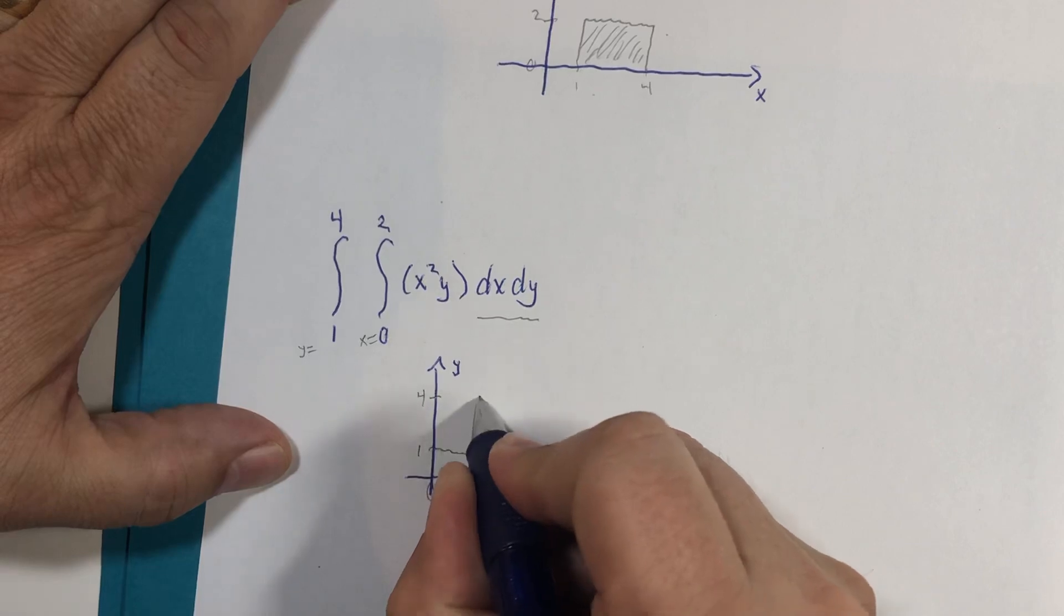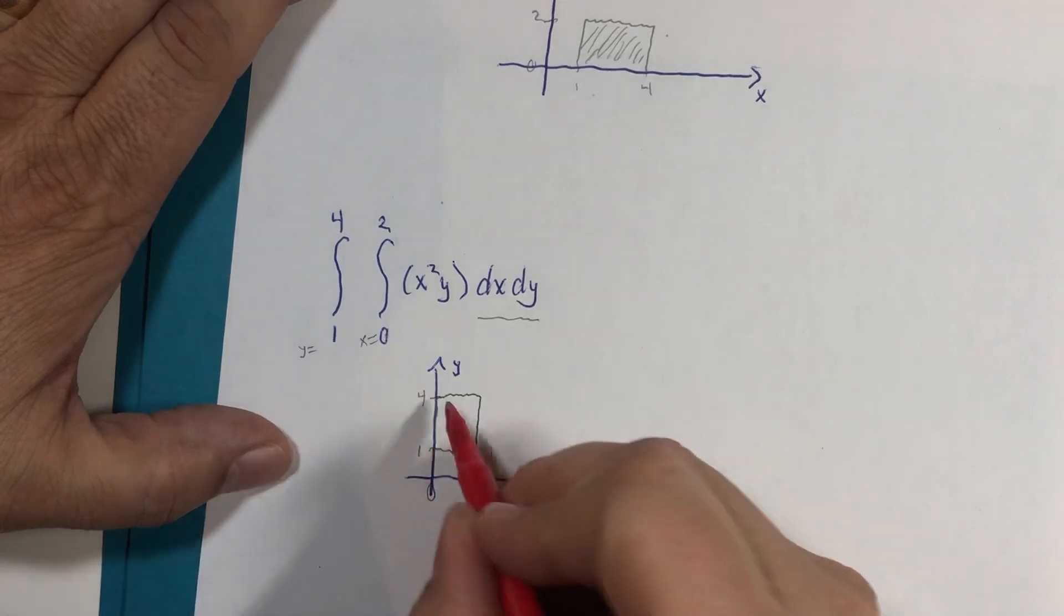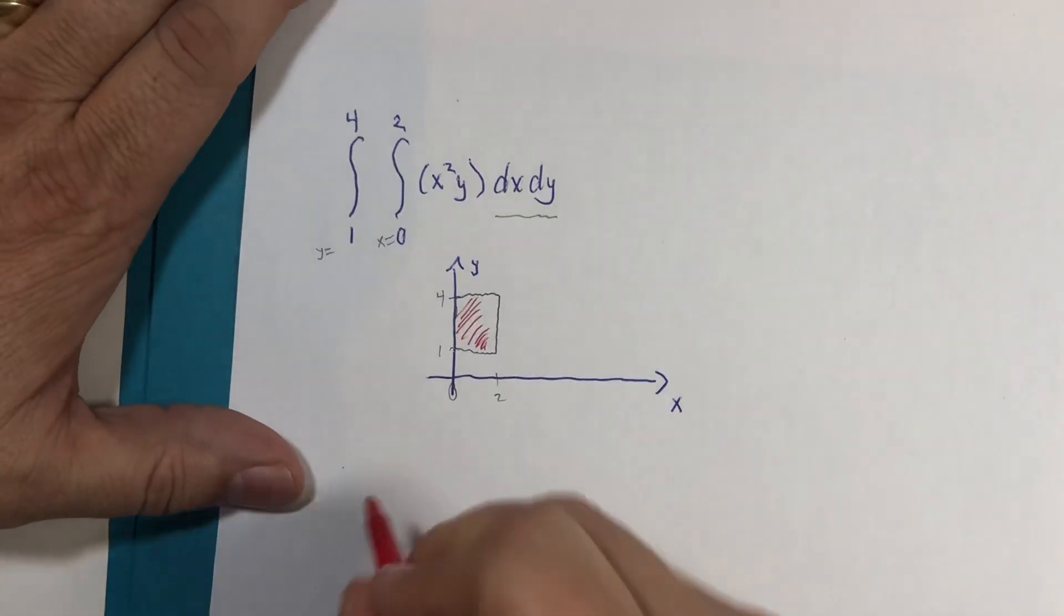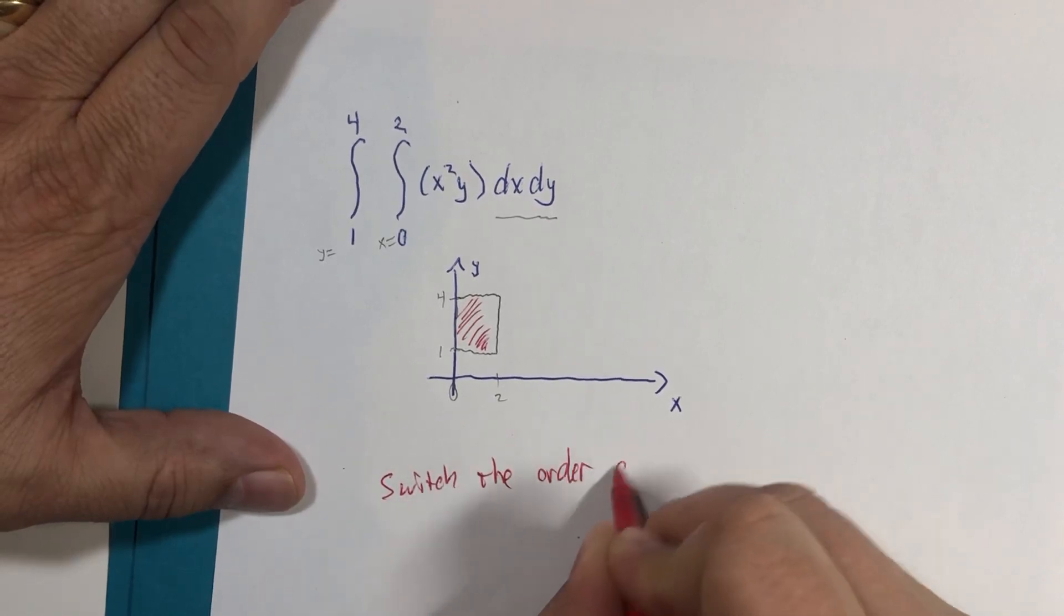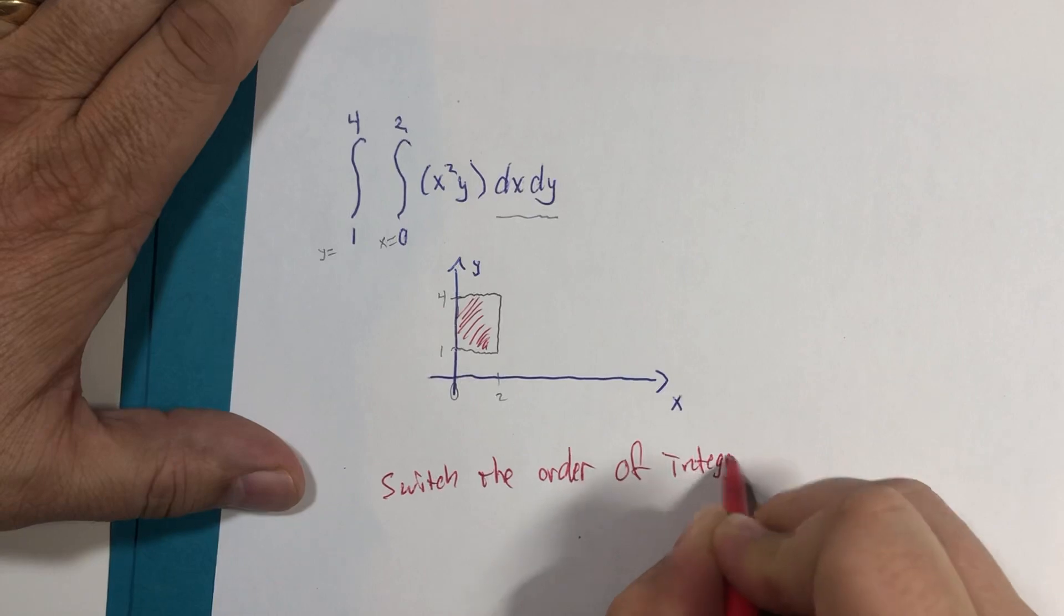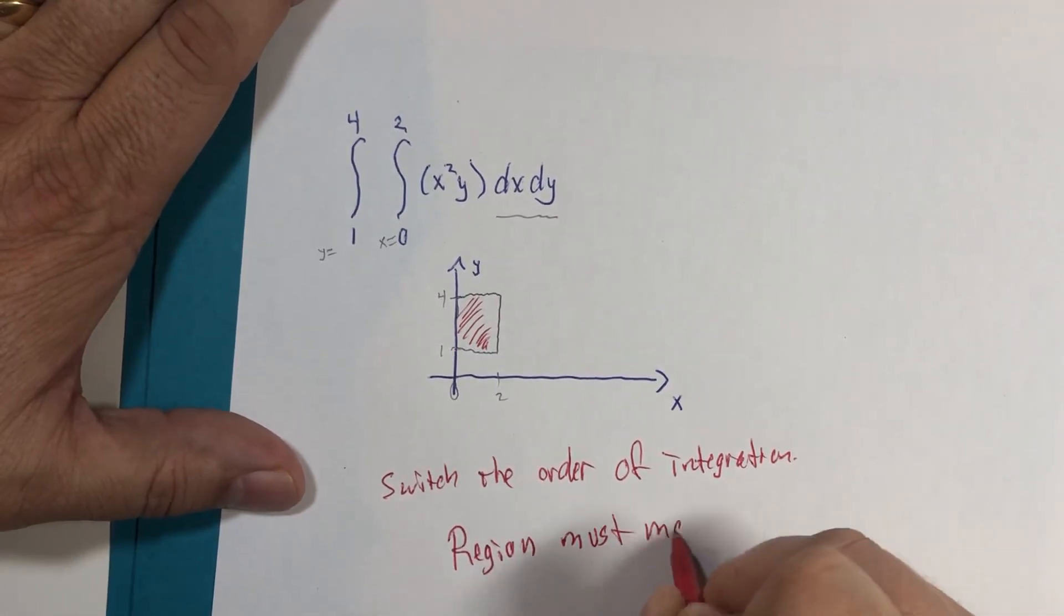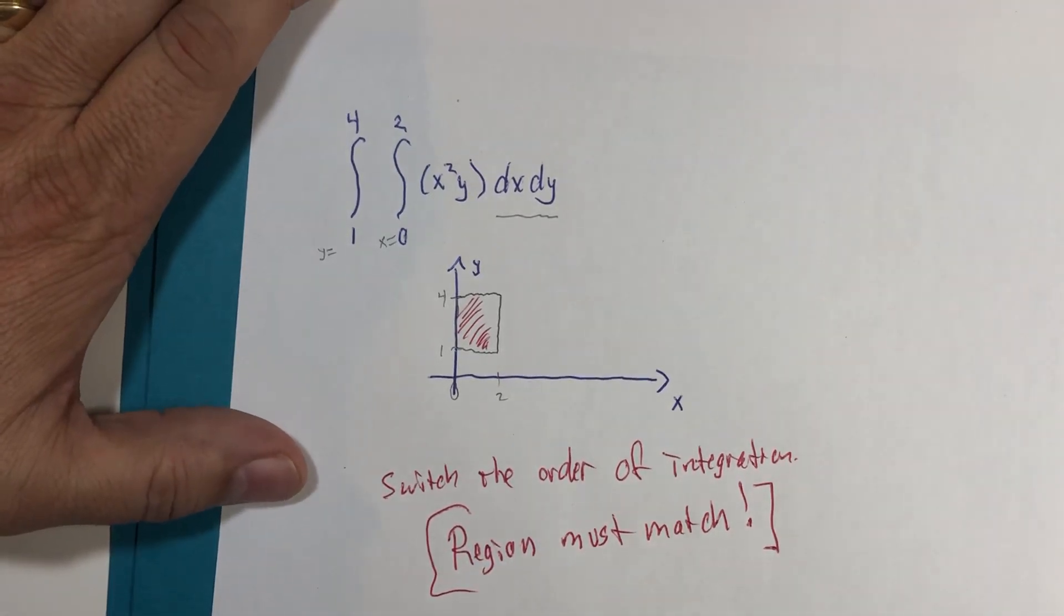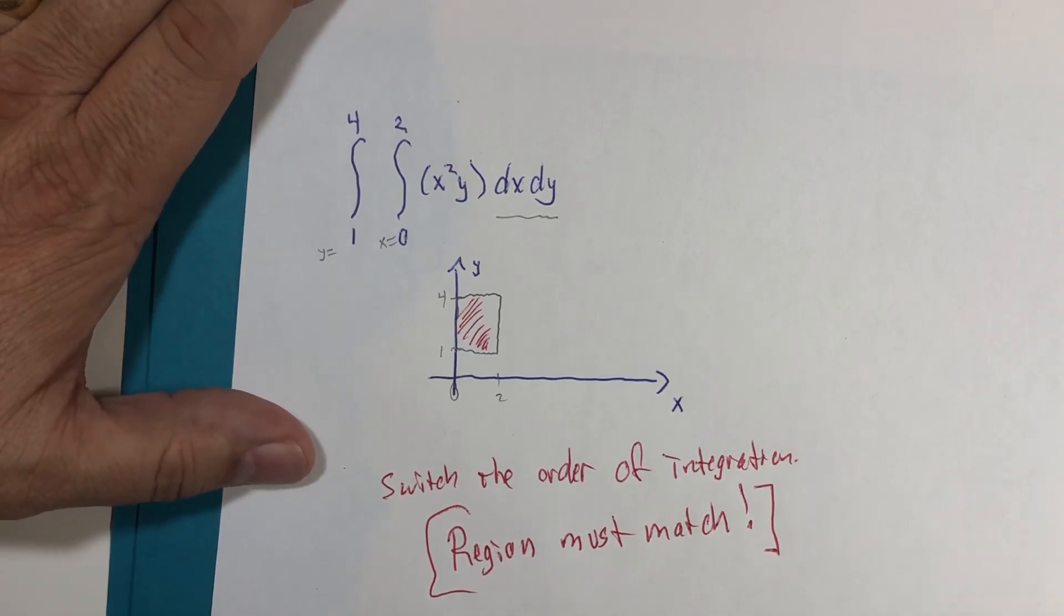And you will see that the secret to having equal integrations, when we switch the order, I'm just going to put a little footnote here. If we're going to switch the order of integration, that region, that picture in the x-y plane has to match. This is our secret. This is our point that we're chasing after. All right. Another example coming up soon. This is our mission.